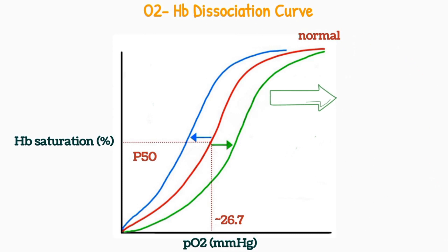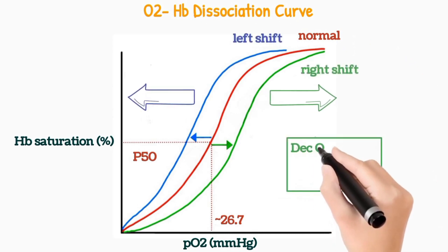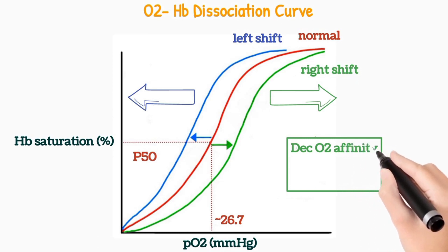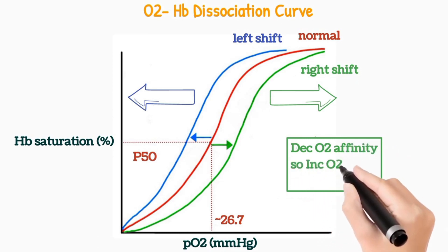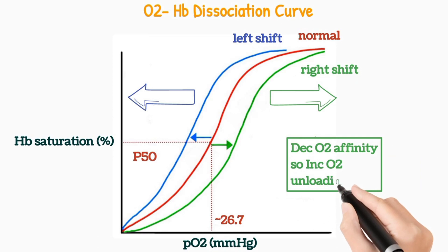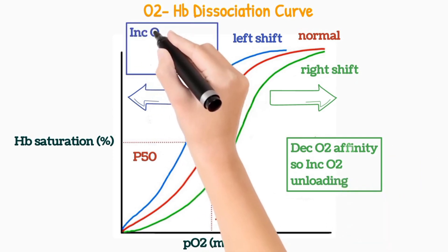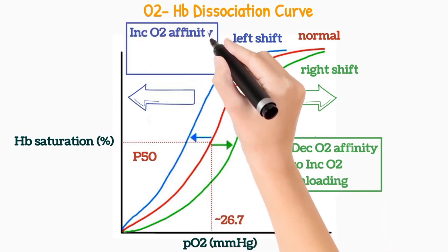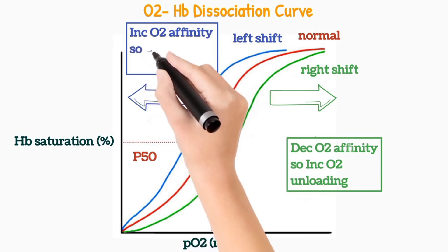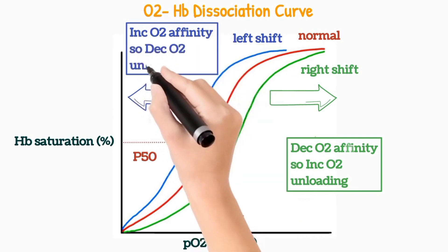The curve may be shifted either towards the right or towards the left. The right shift of the curve shows decreased oxygen affinity of hemoglobin, so there is increased oxygen unloading in tissues. The left shift shows increased oxygen affinity of hemoglobin, so there is decreased oxygen unloading in tissues.